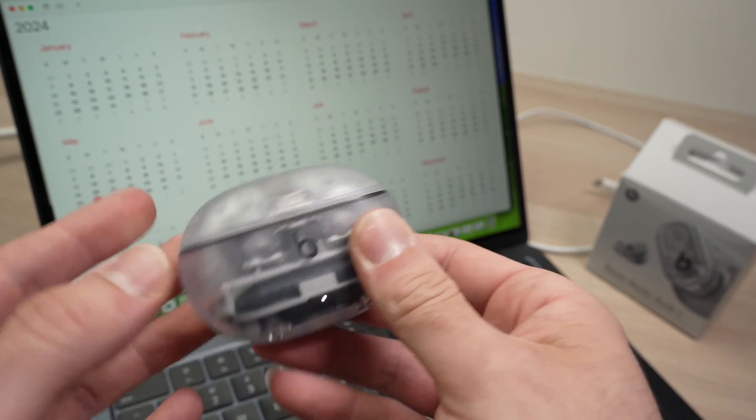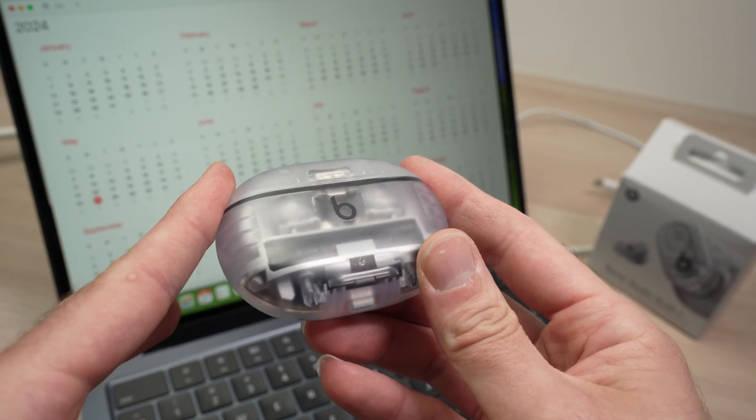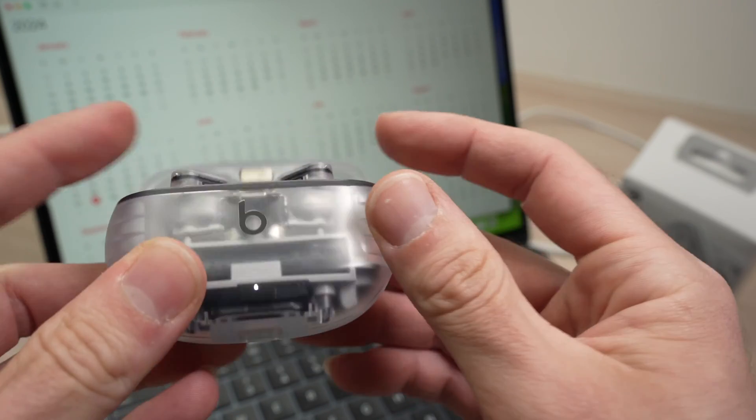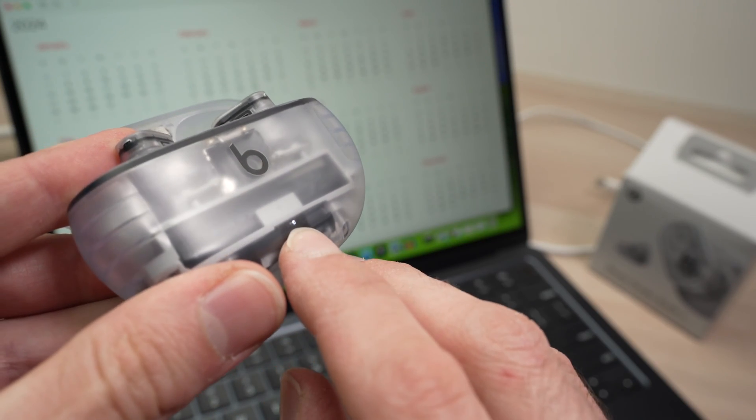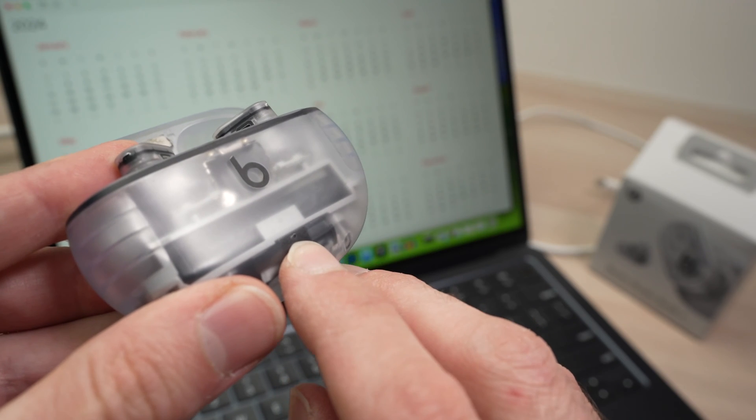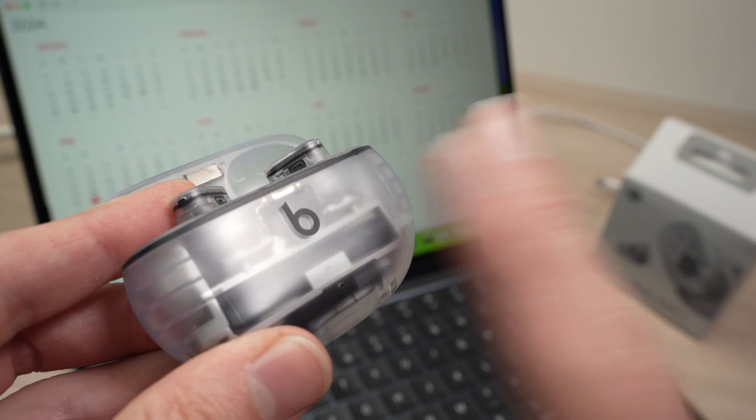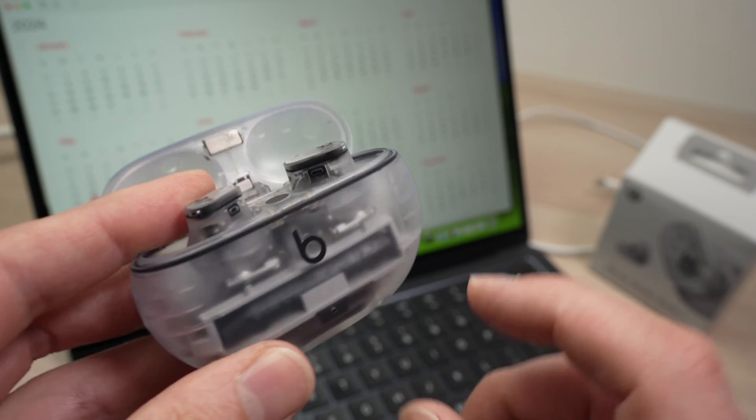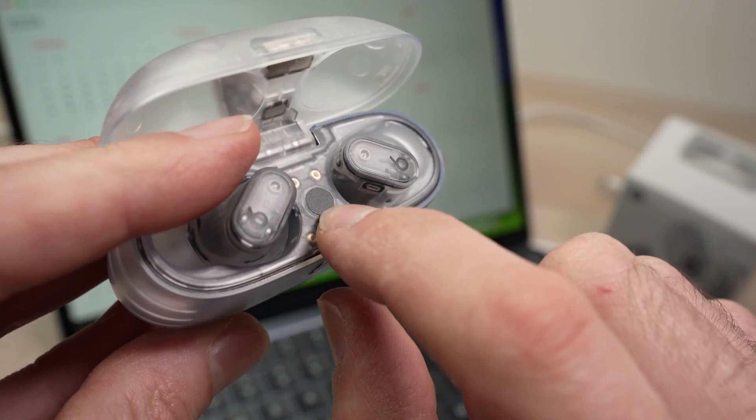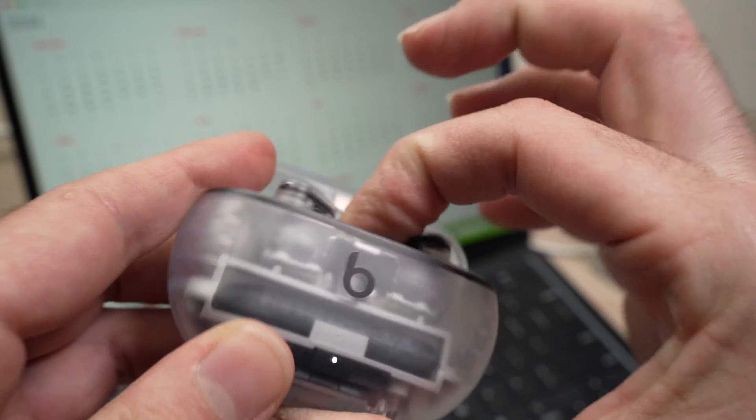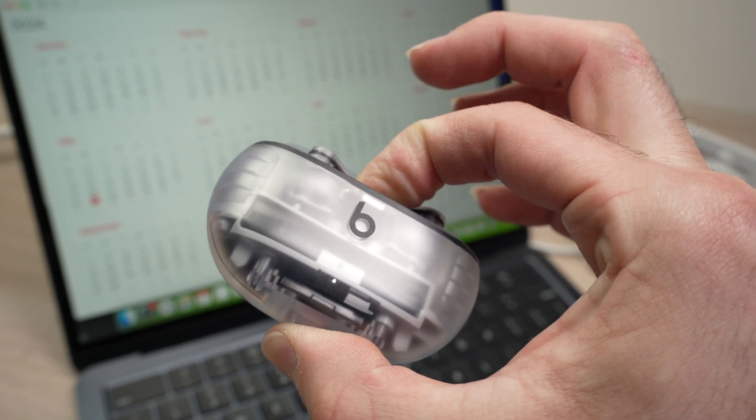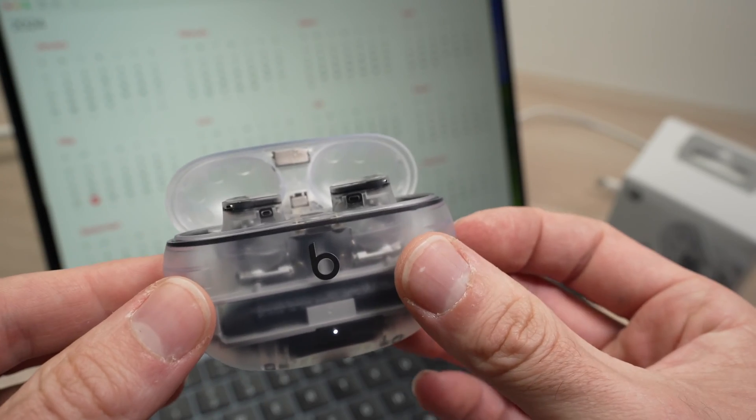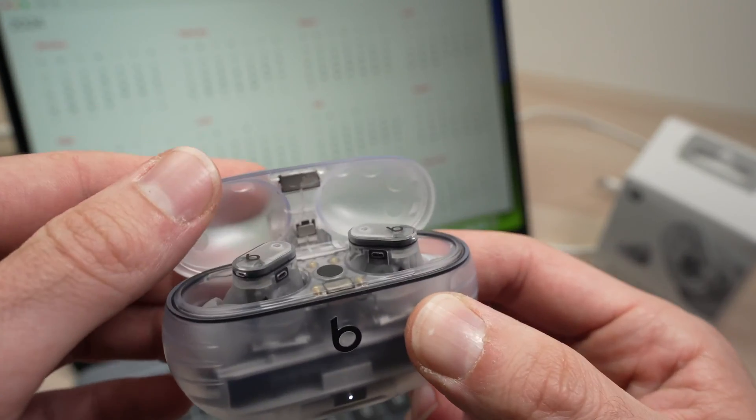The first step is we need to make sure that they are in pairing mode. Open and put the earbuds inside of the case, open the lid, and if this small light over here is flashing white, it means that they are in pairing mode. If you do not see this light flashing, you just need to press this button on the inside of the case for five seconds. Keep it pressed until this light is flashing. They are now in pairing mode. Put these aside and don't close the lid.